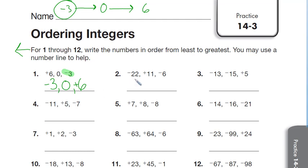If we did number 2, negative 22, positive 11, and negative 6, which number on our number line would be the farthest to the left? Well, it would be negative 22, and then if we move from negative 22 over quite a ways, we would get to negative 6. Negative 22, negative 6, and then if we kept continuing on our number line to the right, the biggest number would be positive 11. That would be here.